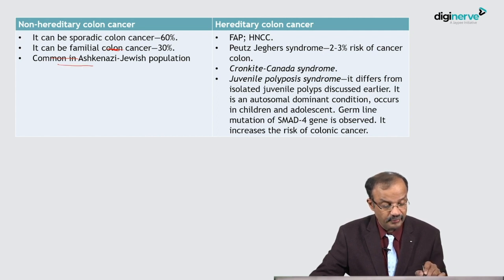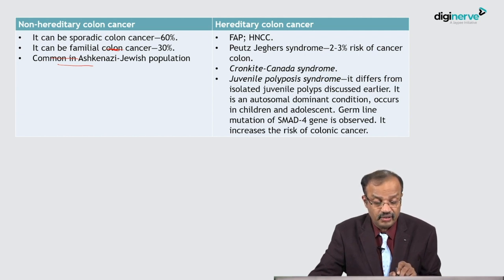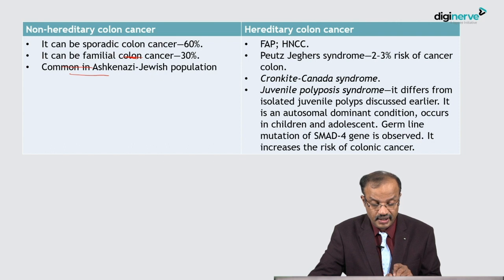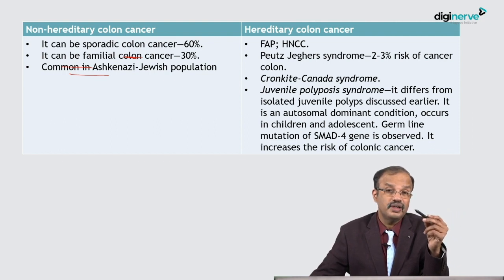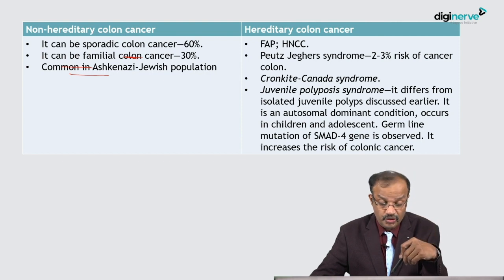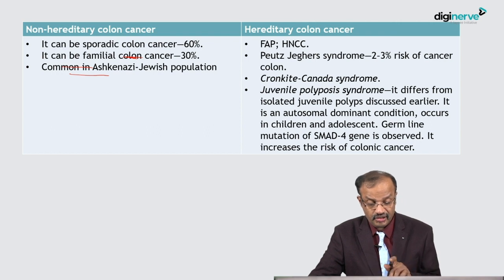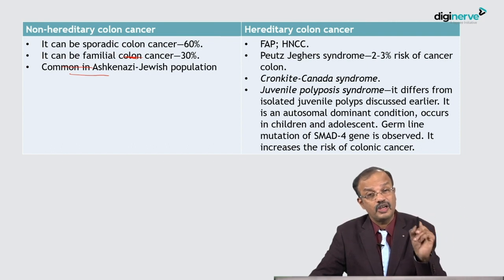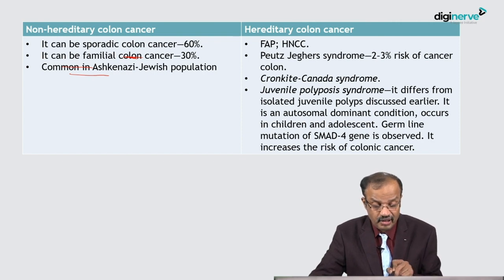Colonic cancer is common in the Ashkenazi Jewish population. Hereditary syndromes include FAP and HNPCC. Peutz-Jeghers syndrome carries a two to three percent risk of colon cancer. Juvenile polyposis syndrome is different from isolated juvenile polyps — it is an autosomal dominant condition in children and adolescents with germline mutations in SMAD4 genes. Juvenile polyposis syndrome increases the risk of colon cancer, unlike isolated juvenile polyps which are benign and not premalignant.